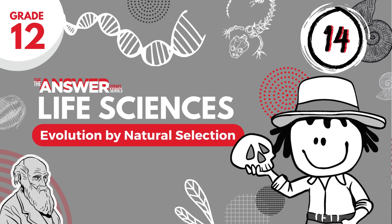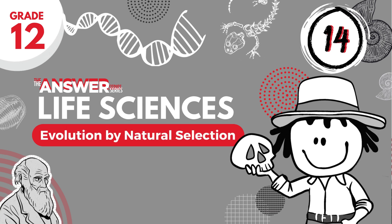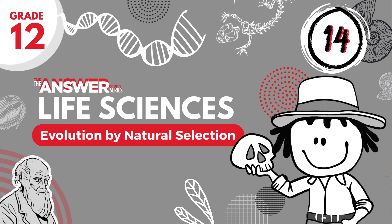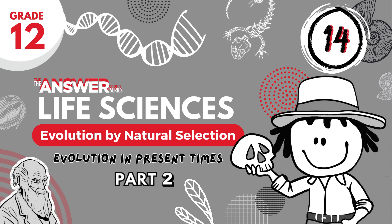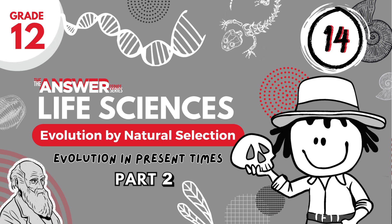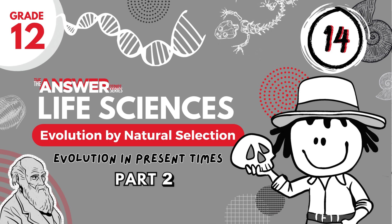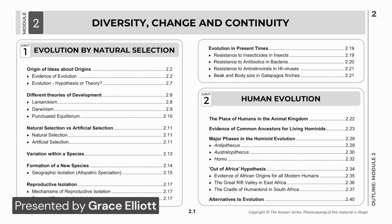Hello Grade Twelves and welcome to the Answer Series Life Sciences videos based on our study guides. In this video we deal with Part 2 of Evolution in Present Times, focusing on resistance to antiretrovirals in HIV viruses and beak and body size in Galapagos finches — these being the third and fourth examples of evolution in present times.